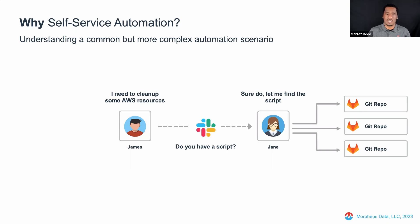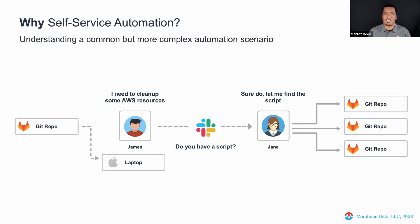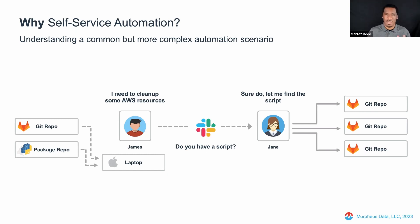But it's a Python script, and there are some additional libraries that Jane included — like the Boto3 library for AWS and some additional libraries to iterate through the data and present it in a nice format. So now James has to download and install those packages to his laptop. He has to go through that process and make sure all those packages are there.